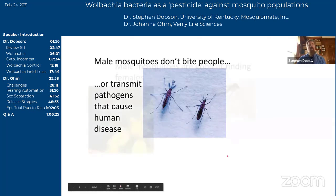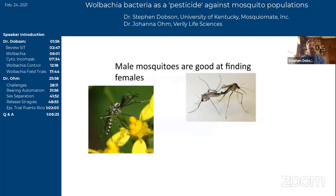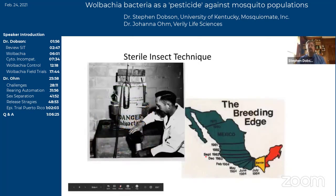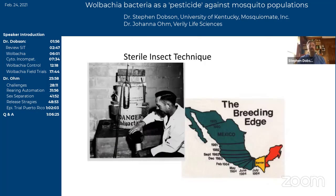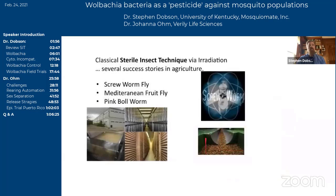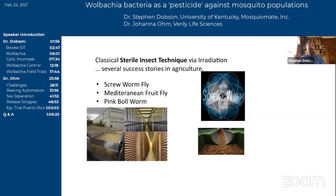Males don't transmit pathogens that cause human disease. And importantly, they are highly evolved and adapted to seek out and mate with female mosquitoes, which makes them the perfect delivery mechanism. You've also heard from previous lectures that historically these approaches — in which male mosquitoes are being released — are based on irradiation of those males. And there are a number of very successful agricultural examples, including the screw worm and the pink bollworm. Some of these have been successful on a continental scale.